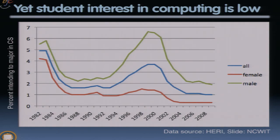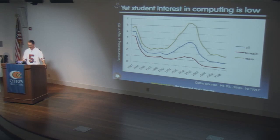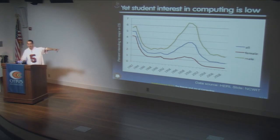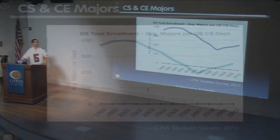Why are students not going into computing? It's even worse when you look at student interest. This chart from NCWIT shows the percentage of people intending to major in computer science going back to 1982. There was a big bubble when the personal computer came online, then the dot-com bubble and bust, and now we're at some of the lowest numbers in history — at a time when computing should be the new literacy.